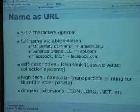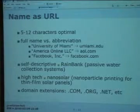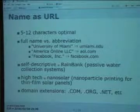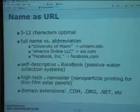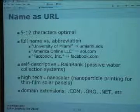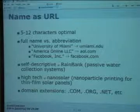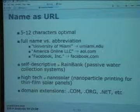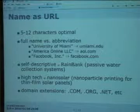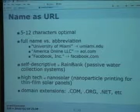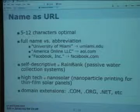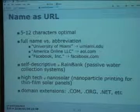If it can be self-descriptive, that's ideal. Rain Bank is a real company doing passive water collection — it rains on a roof, goes into a gutter, and they collect the water. It's a great URL: two clearly distinguishable English words, between five and twelve letters, easy to see. In a high-tech example, Nano Solar is a company doing nanoparticle printing for thin-film solar panels — another example of putting the concept right into the name.